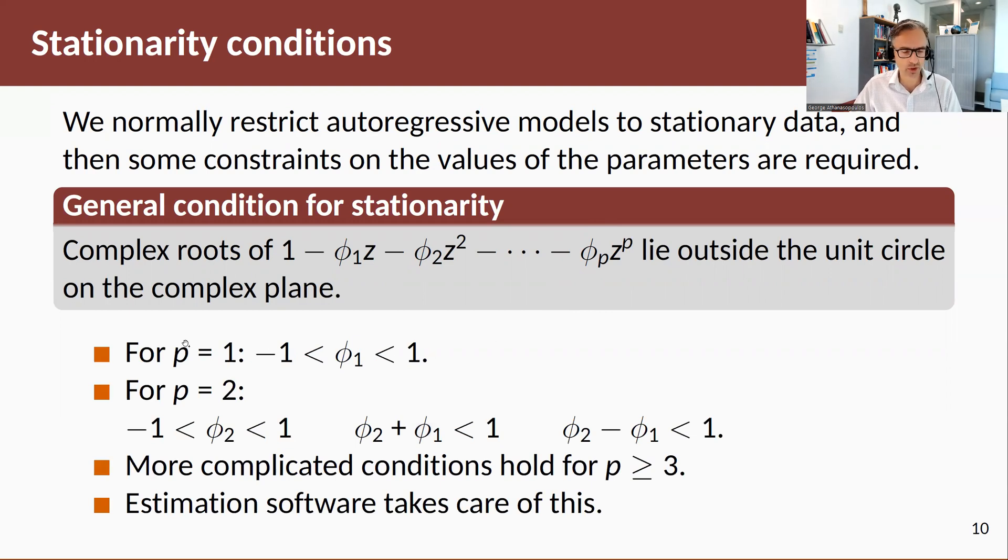These are not too hard to derive. Just a couple of special cases: For p equals 1, we restrict phi_1 to be between -1 and 1. If p equals 2, then these are the conditions. It becomes more complicated if p is greater than or equal to 3, but the ARIMA function will take care of itself and estimate a stationary model.